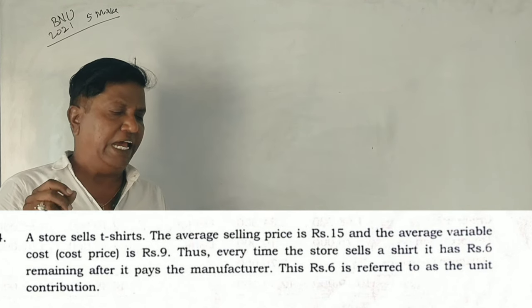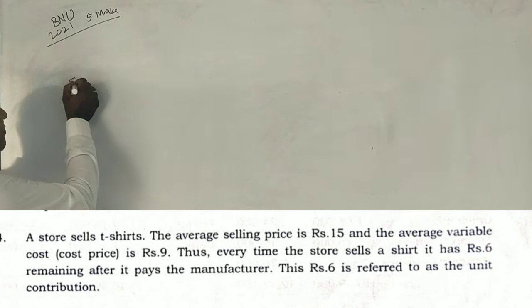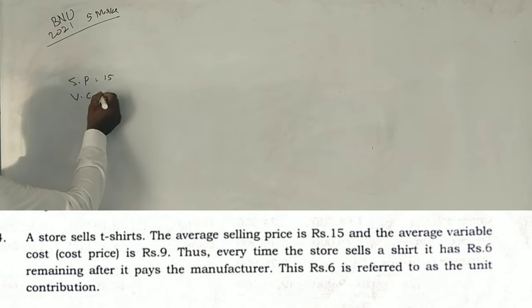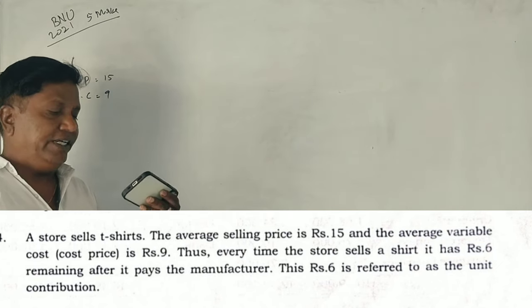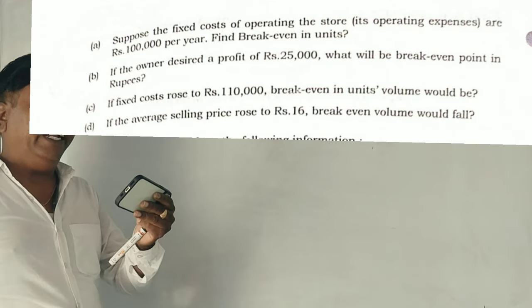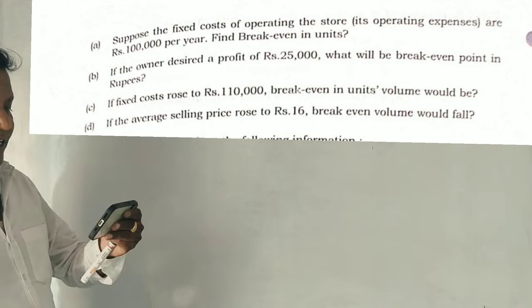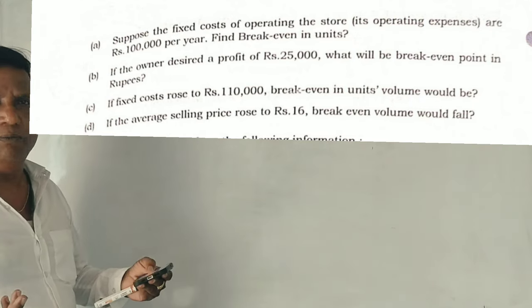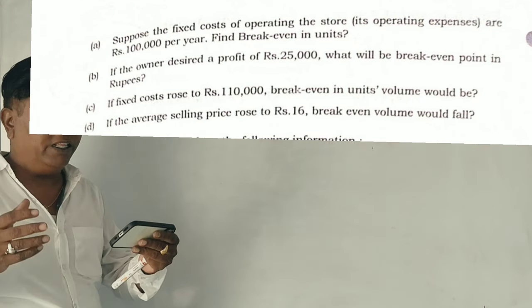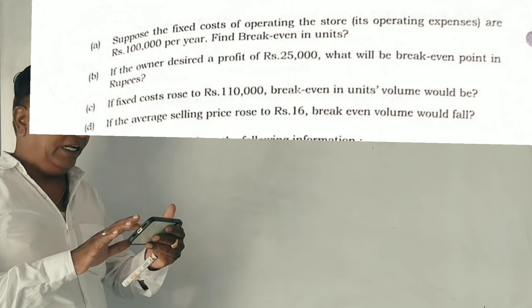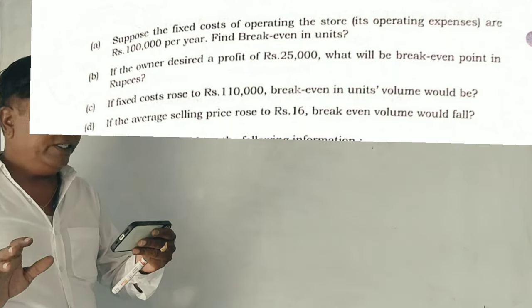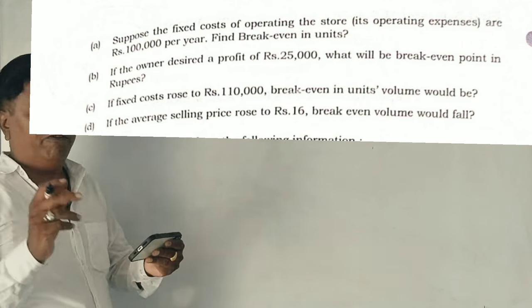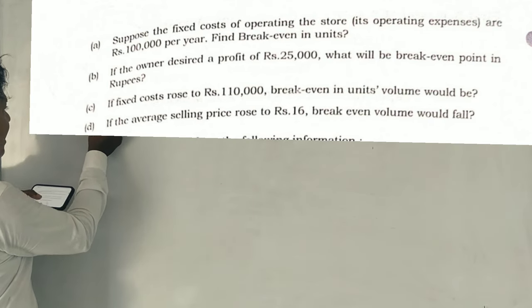A store sells t-shirts. The average selling price is 15 rupees. The average variable cost is 9 rupees. Thus, every time the store sells t-shirts, it has 6 rupees remaining after it pays the manufacturer. This 6 rupees is referred to as the unit contribution.